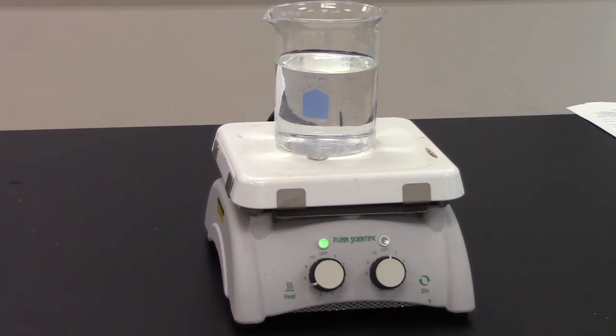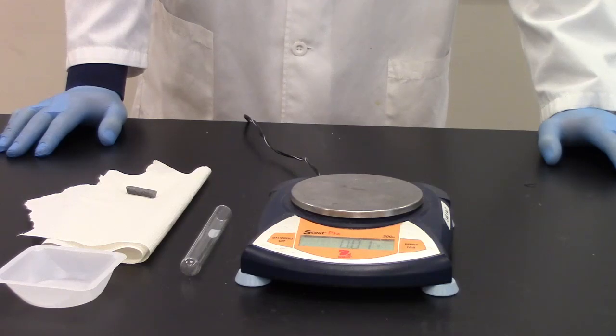So our first step in this lab is to fill a 600 milliliter beaker about two-thirds of the way full with water and we need to get that on our hot plate as soon as possible to get that water boiling. Remember, water boils at 100 degrees Celsius.